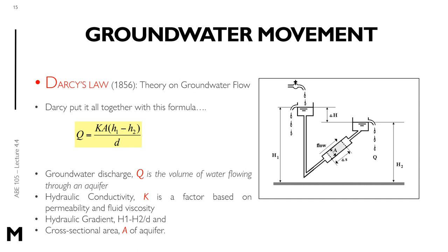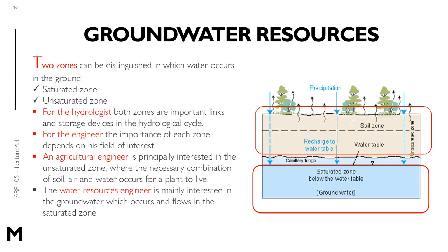Darcy simplified this with the formula: Q (volume of water flowing through an aquifer) equals K (hydraulic conductivity, based on permeability and fluid viscosity) multiplied by A (cross-sectional area of the aquifer), multiplied by (H1 minus H2) — the hydraulic head difference — divided by D, the distance through which flow occurs.